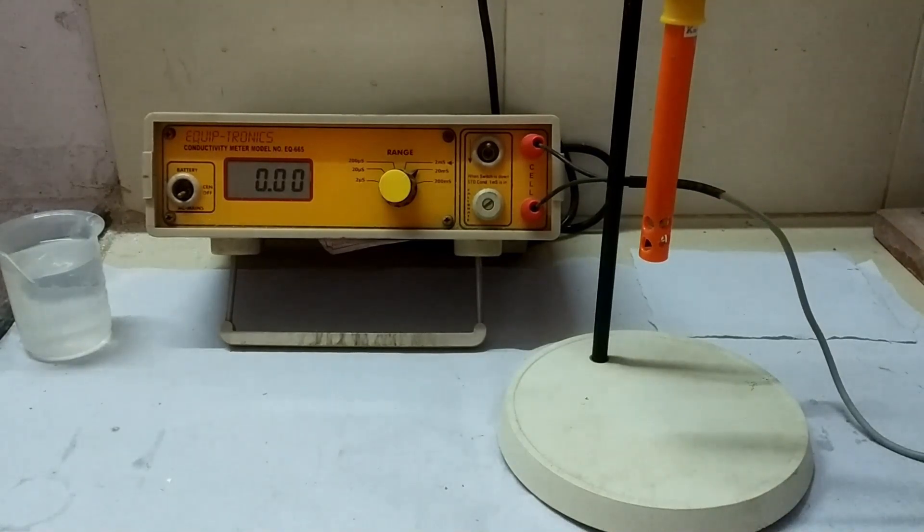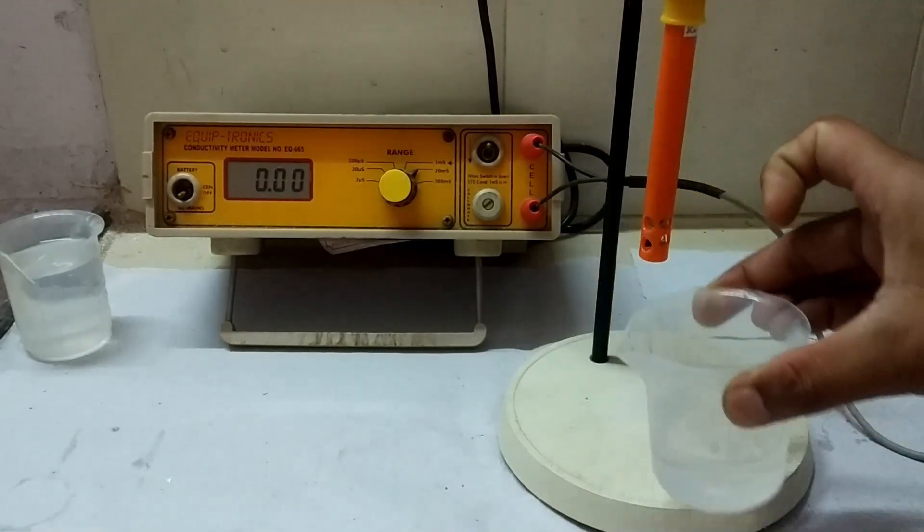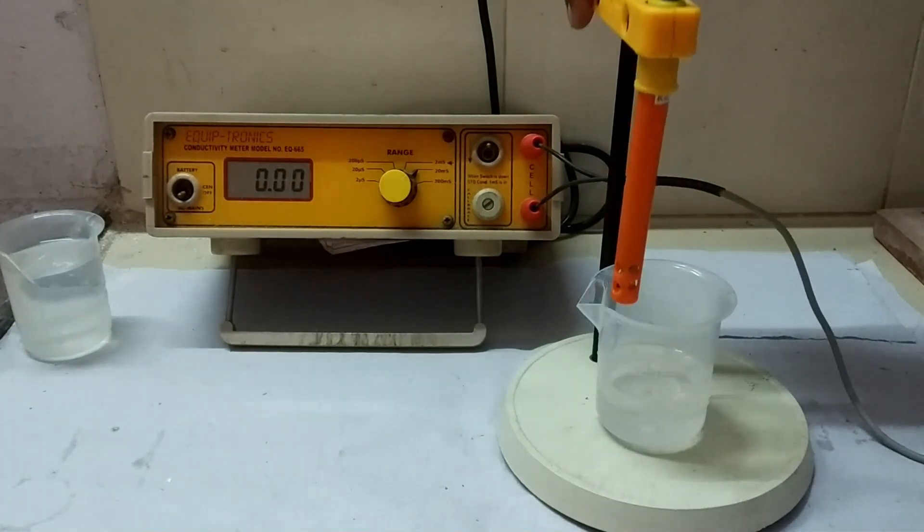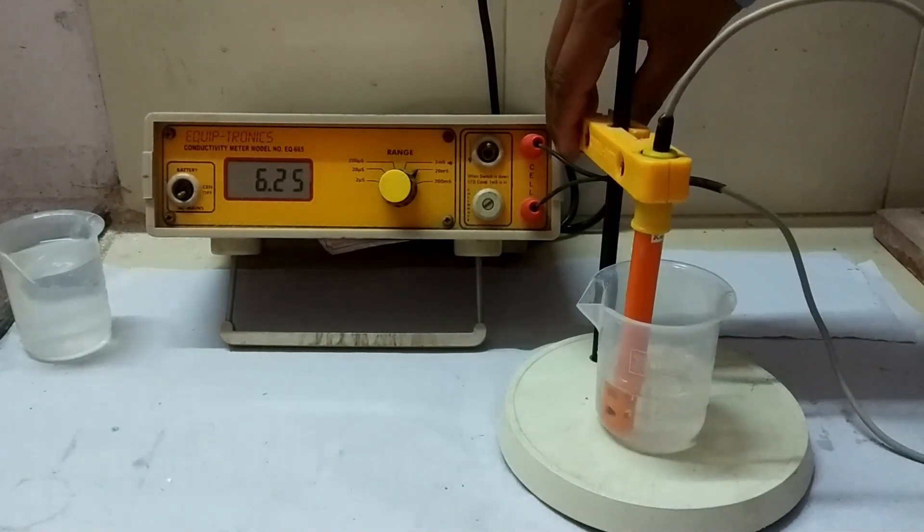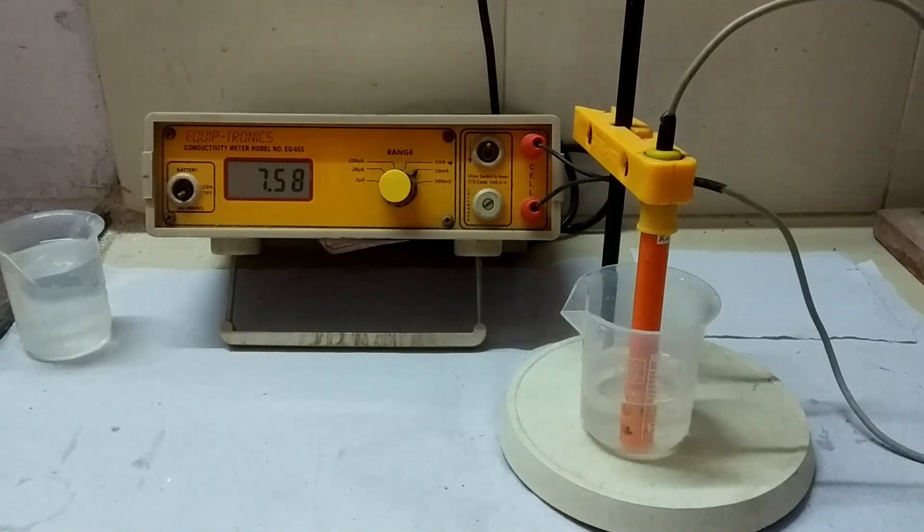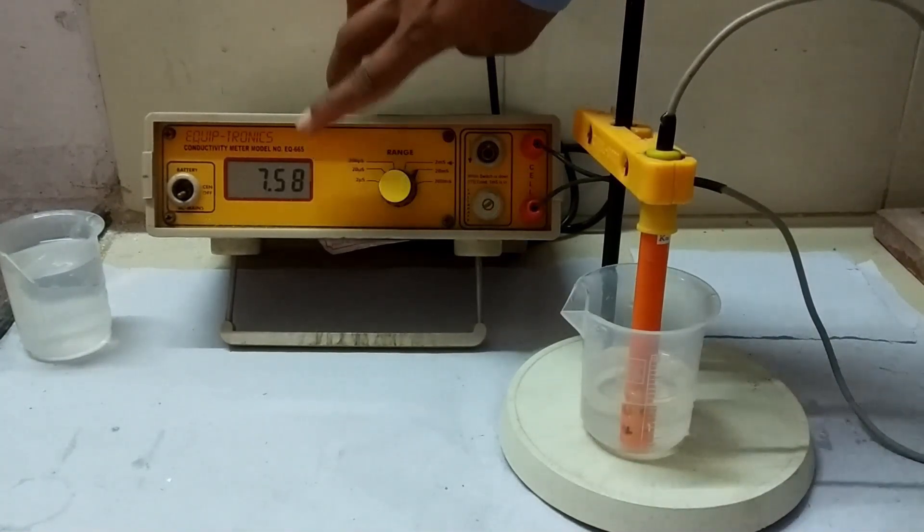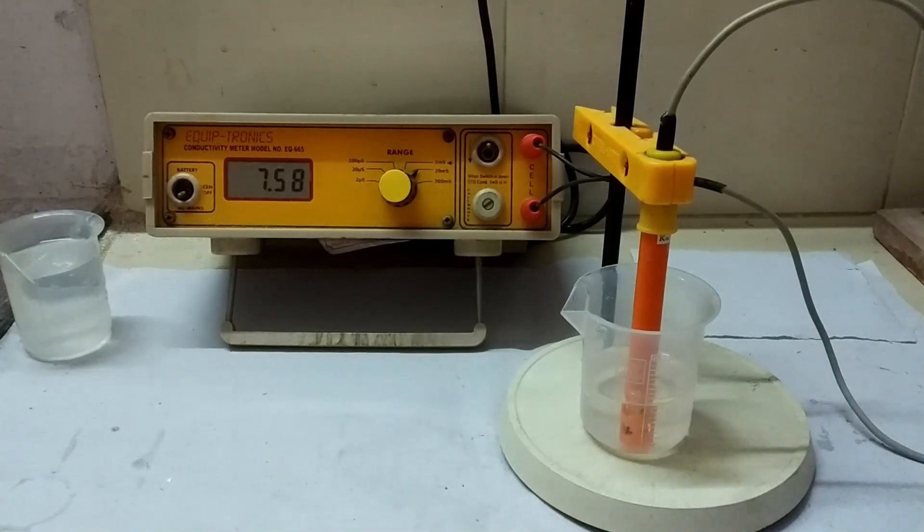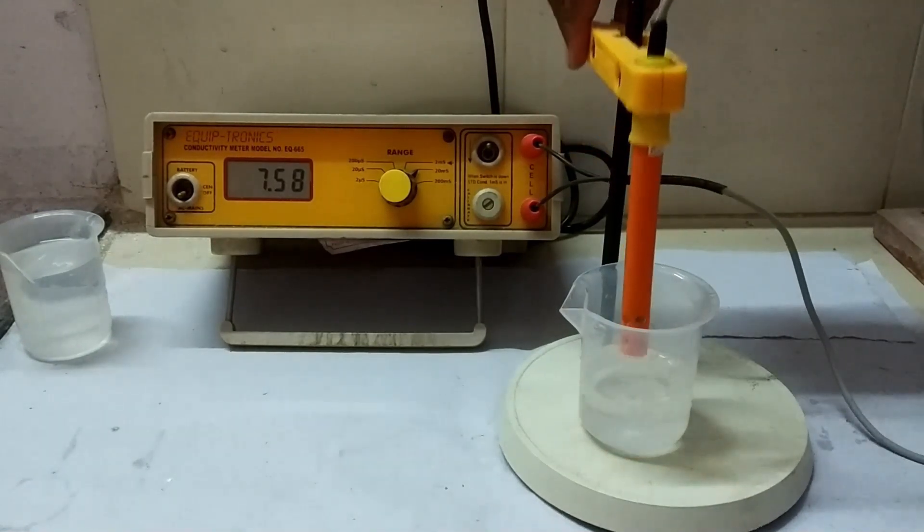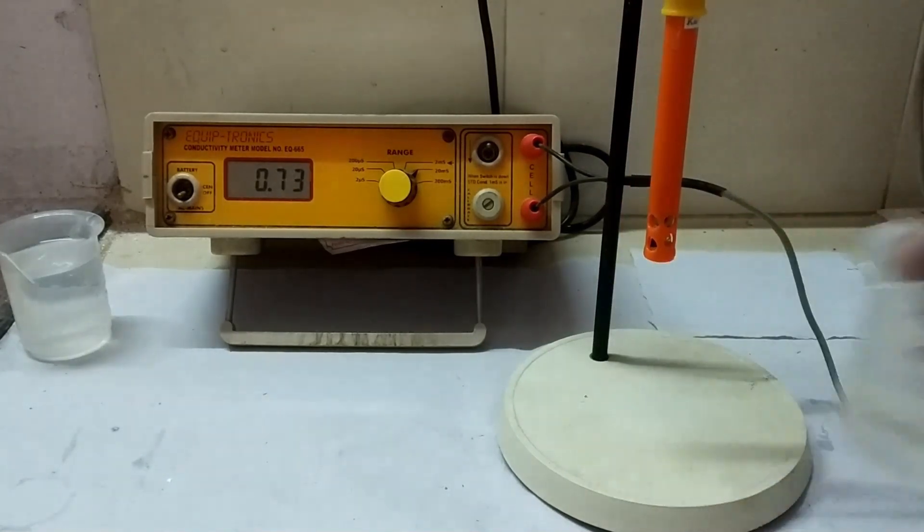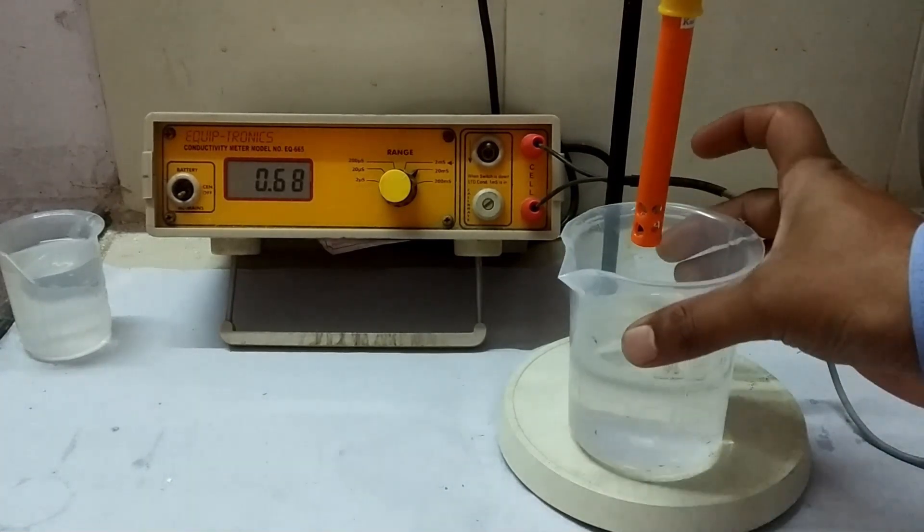Take the solution of unknown conductance. Dip the conductivity cell into this solution. The display shows conductance of the solution in millisiemens. Note down the conductance reading. Remove the conductivity cell and clean it again with conductivity water after completion of conductance measurement.